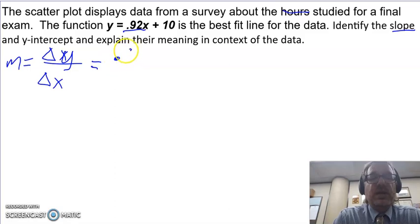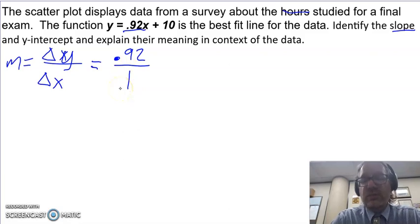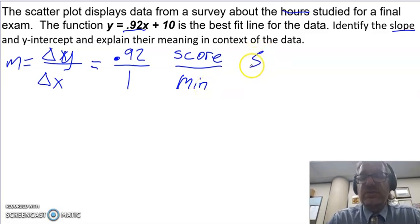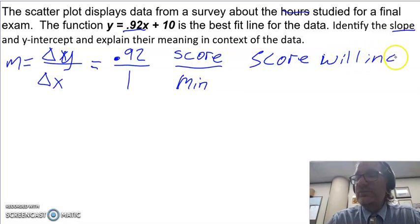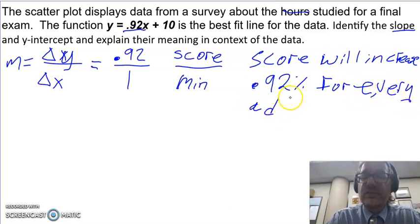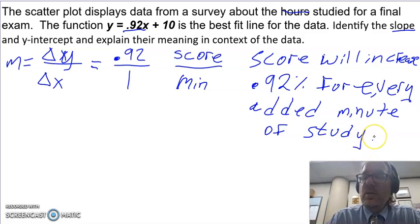So m is delta y change in y over the change in x. So what this means is if we have 0.92, there's my change in y over 1. So I can make it a fraction. So we are looking at the change in the score over the change in minutes. So what does this mean? It means my score, since it's positive, it's going to increase. So score will increase. The score will increase 0.92% for every added minute of study. So my score will increase by 0.92% for every added minute of study.